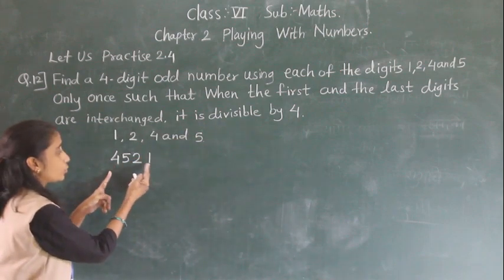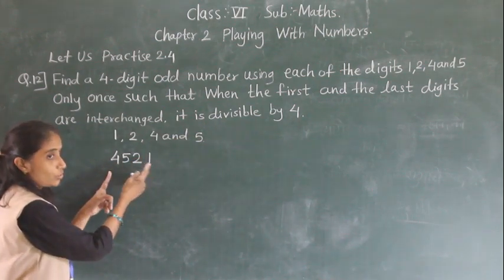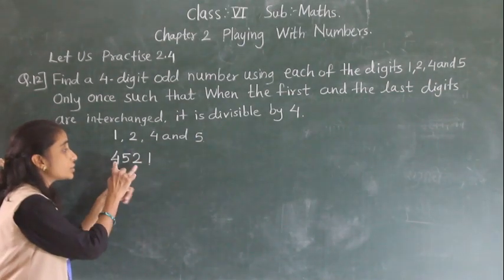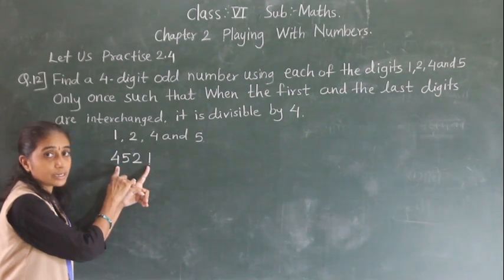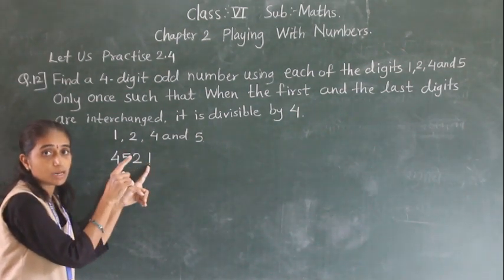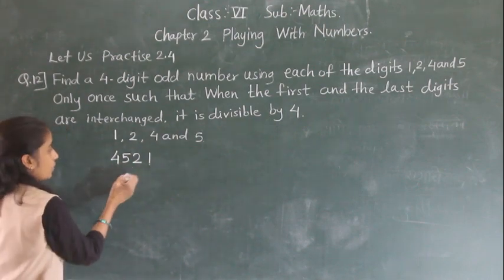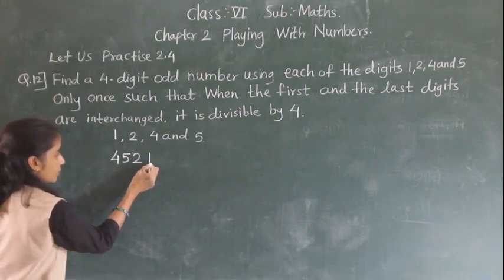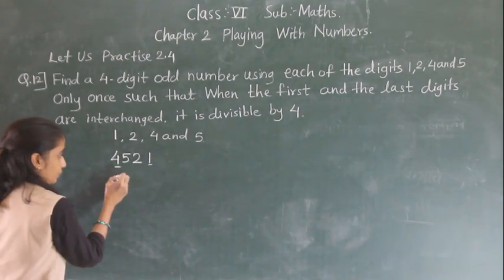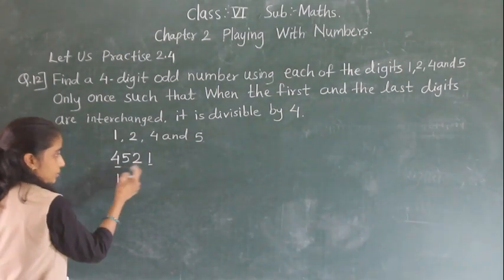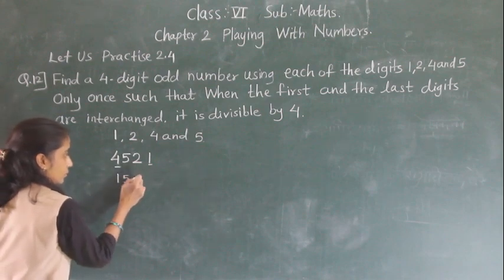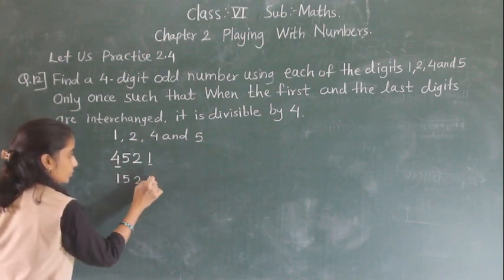1st and last digits, we are going to interchange. The number which we have, after interchange, we should get a number divisible by 4. So I have to interchange the 1st and last digits. When we interchange, if we come to something like 5,2,4 expressed arrangement, for a 4-digit number to be divisible by 4, the last two digits must be divisible by 4.